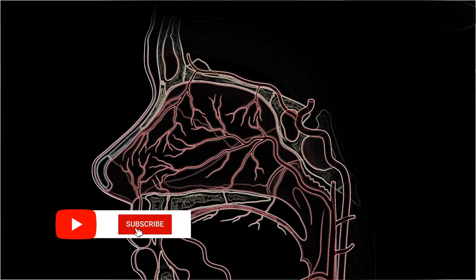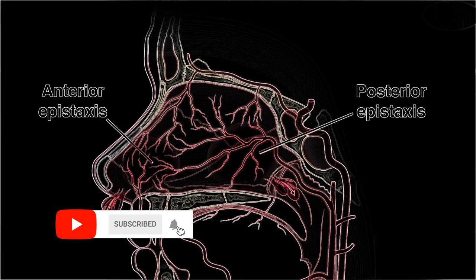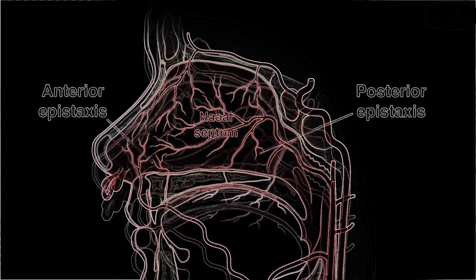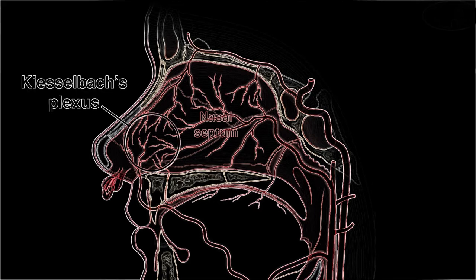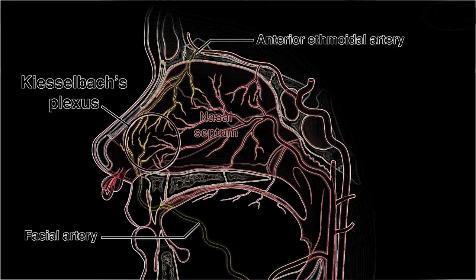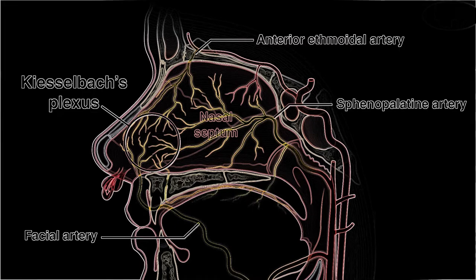There are two types of epistaxis — anterior and posterior — distinguished by their respective blood supply. The anterior nasal cavity has a very rich blood supply, and several vessels anastomose at a region of the anterior septum called Kiesselbach's area or Kiesselbach's plexus, including branches from the facial artery, the anterior ethmoidal artery, and the sphenopalatine artery. Most cases of anterior epistaxis involve this region.